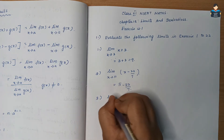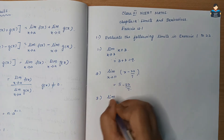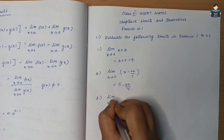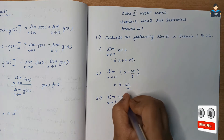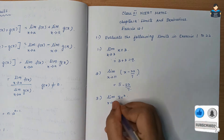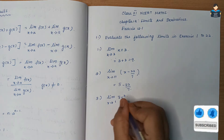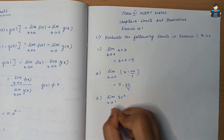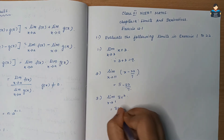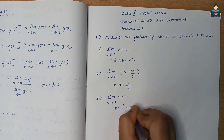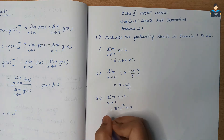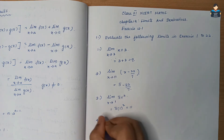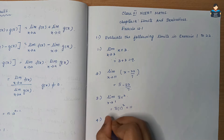Third sum: limit r tends to 1 of π r squared. Substituting r = 1, we get π times 1 squared, which equals π.